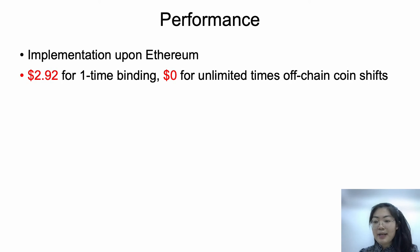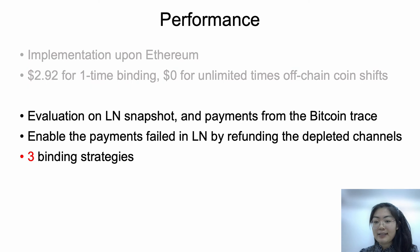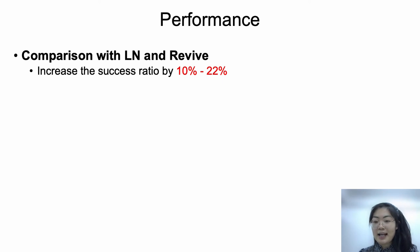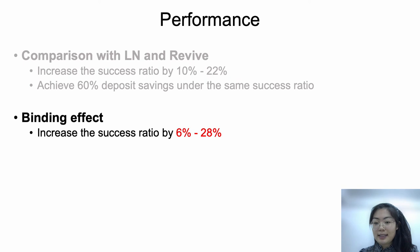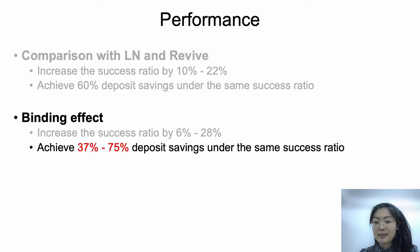About the performance, we give an implementation upon Ethereum and measure the cost for the on-chain procedures. It costs around $3 for the on-chain binding, and the coin shifts are free. We evaluate Shadoff's effect in the off-chain network using the Lightning Network snapshot and payments sampled from the Bitcoin trace. The core idea is that failed payments in the network could be enabled by refilling the depleted channels via rebalancing, and we set up the bindings between users using different binding strategies. The results show that, compared with Lightning and Revive, Shadoff increases the success ratio by 10% to 22%. To achieve the same success ratio, Shadoff only needs 40% of users' deposits, meaning 60% of deposits are saved. Under different binding strategies, the success ratio is increased by 6% to 28%, and under the same success ratio, Shadoff achieves 37% to 75% deposit savings.